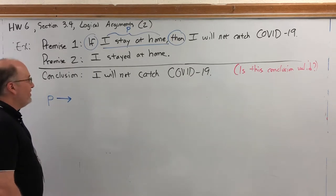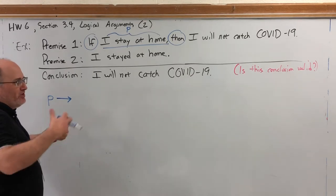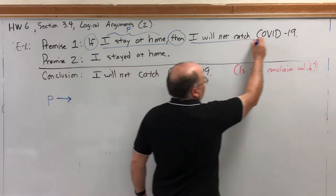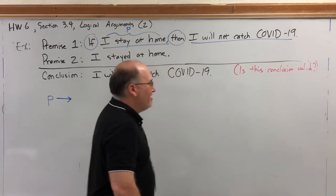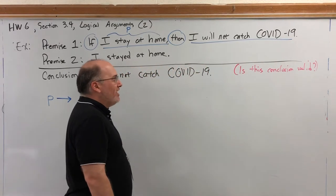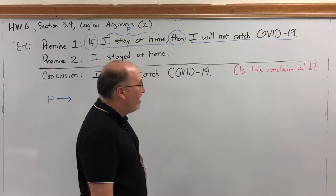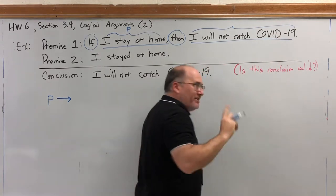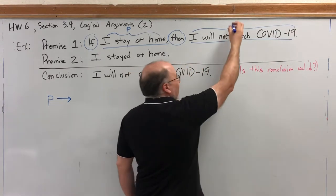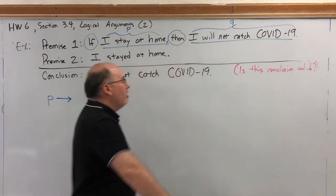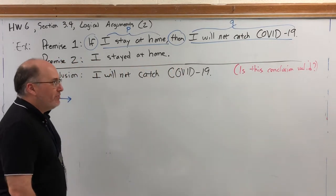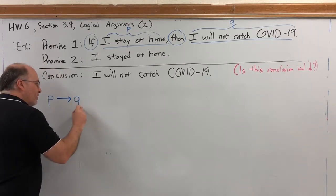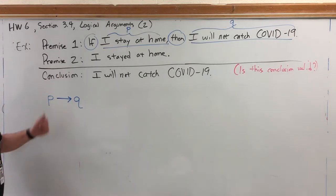So, the second simple statement in the conditional will be the simple statement after the word then. Assuming it's a simple statement, and it is, I will not catch COVID-19. Now, you could argue that that's the negation of a statement because it has the word not in it. However, it is still a simple statement. It conveys one idea, and therefore, we can use a single letter to represent it. So, we're going to let Q represent the simple statement, I will not catch COVID-19, and that would be the consequent of the first premise, which is a conditional.